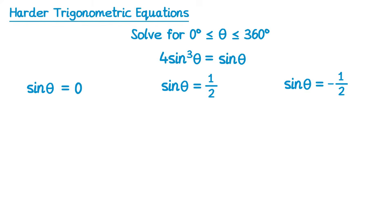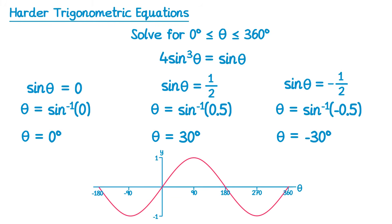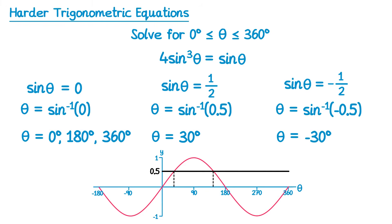We do inverse sin of 0, which is 0; inverse sin of one half, which is 30 degrees; and inverse sin of negative one half, which is negative 30 degrees. Looking at the graph of y equals sin theta with a horizontal line at 0, there are three solutions: 0, 180, and 360. For sin theta equals one half, we draw a line at one half — two solutions. We already have 30, and using the symmetry of the graph: 180 minus 30 gives 150 degrees.